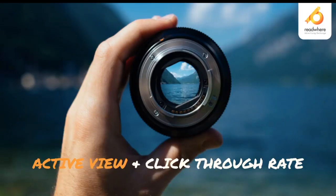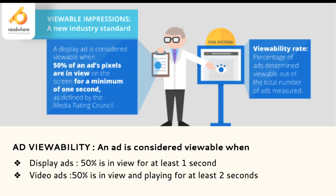Now that we've gone through best practices on AdSense, let's understand what ActiveView is and how it impacts click-through rate. Before we get into ActiveView, let's understand a viewable impression. A display ad is considered viewable when 50% of its pixels are in view on screen for one second. For videos, the threshold changes to two seconds — an ad seen at minimum 50% for two seconds on video is considered a viewable impression.